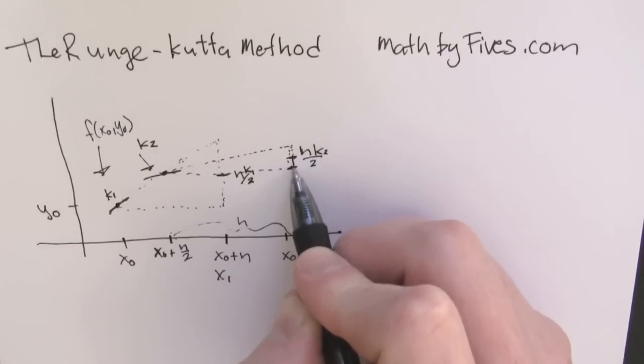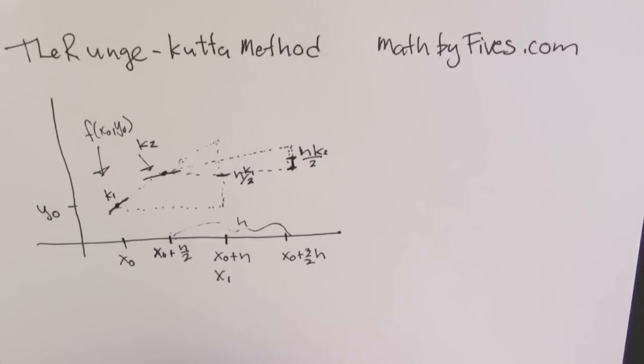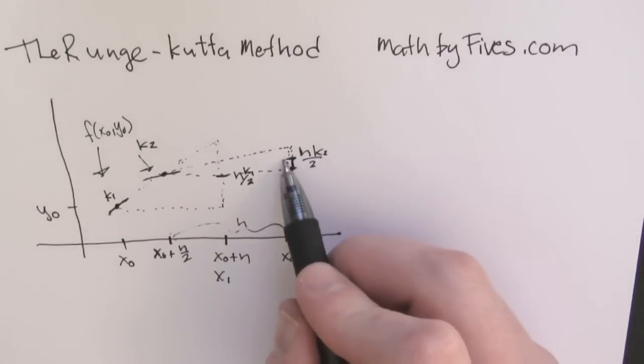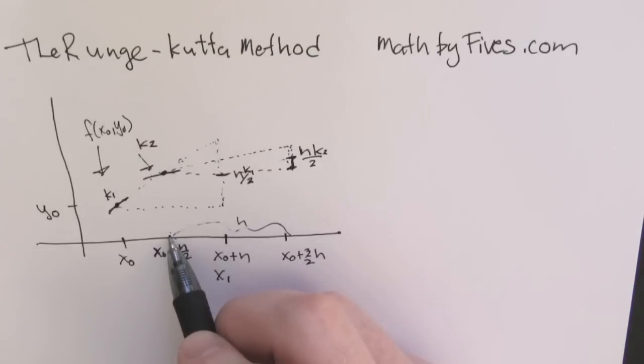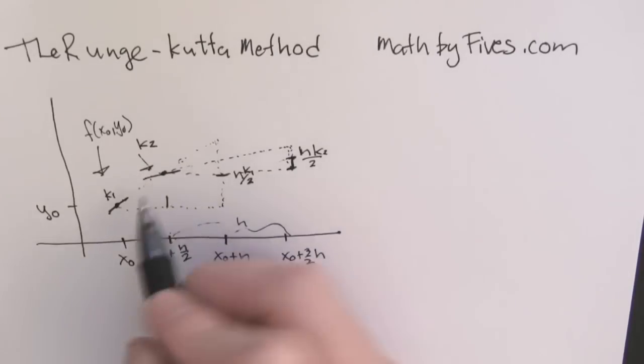So now he takes that new half height, and what's happening there? We're going to trace it back to that x-naught plus h over 2. We're going to go up that new height, and we're going to compute the slope again. That's going to be your k3.